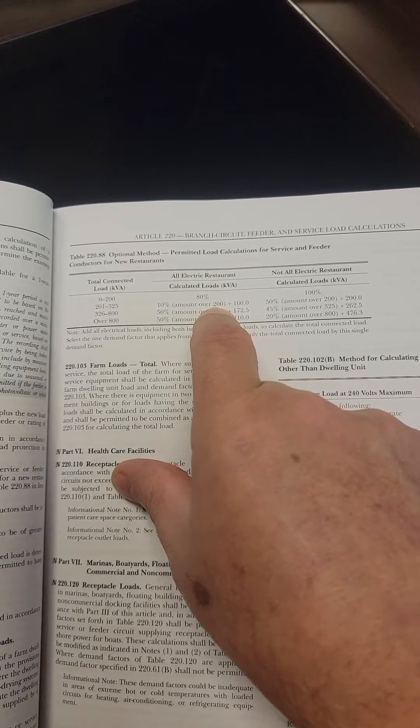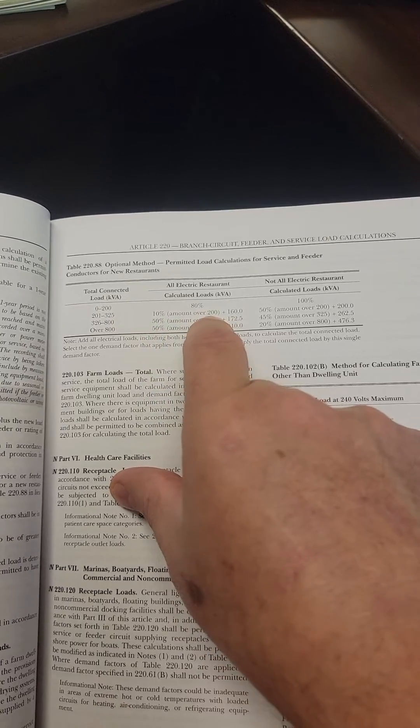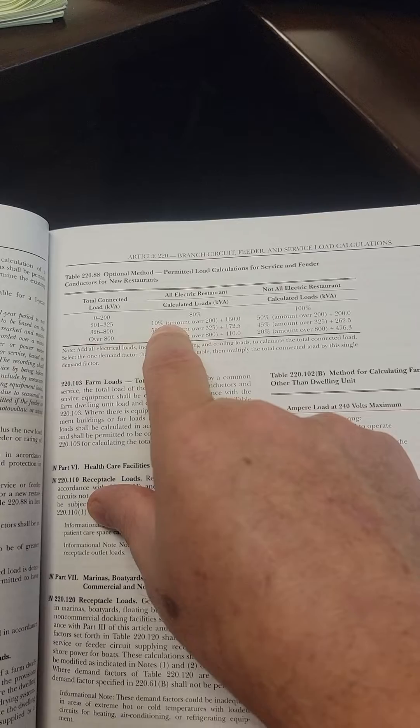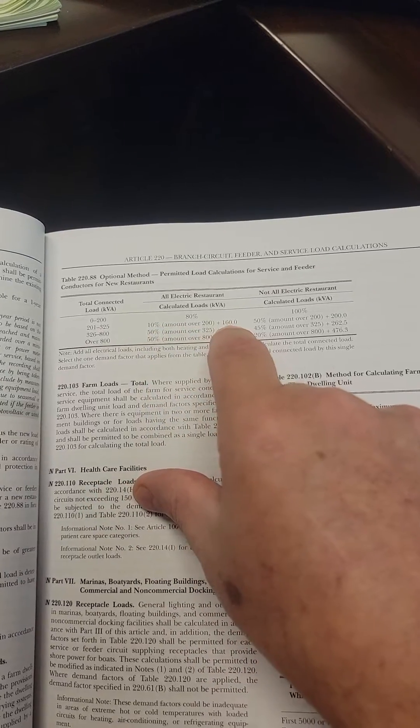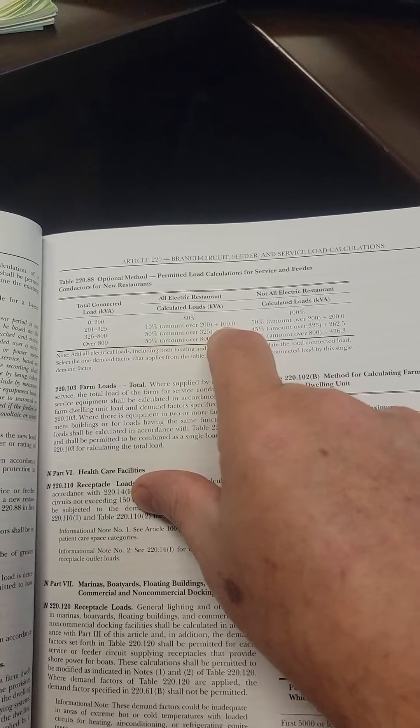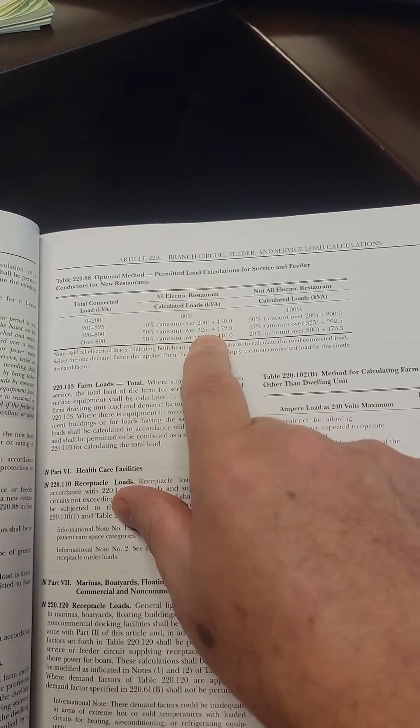You take 10% of that amount. So you'd use the 40 times 10%, and that is four. So that'd be 4 kVA plus 160. So it would be 164 kVA is the calculated load, and that's the answer to the exam question.